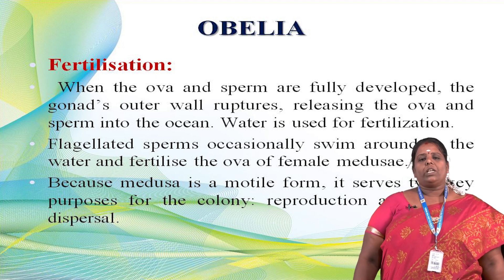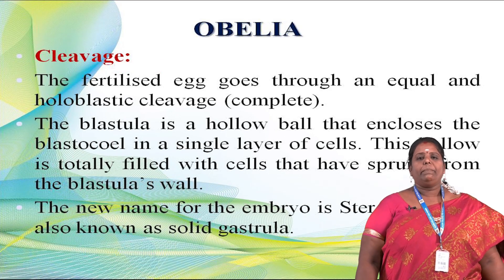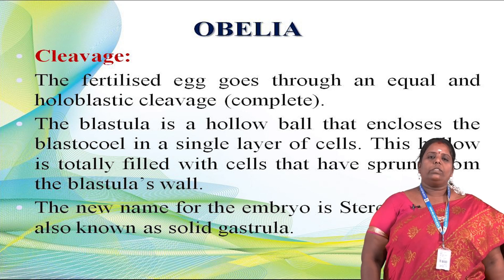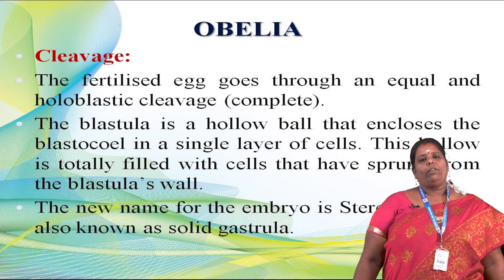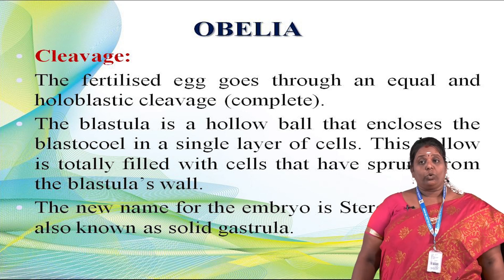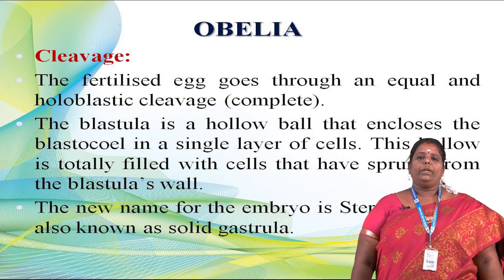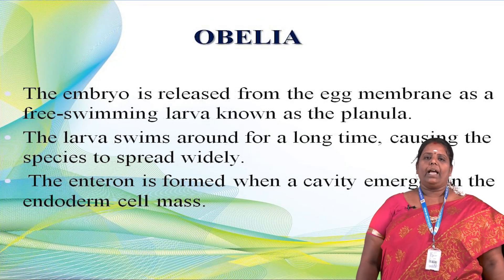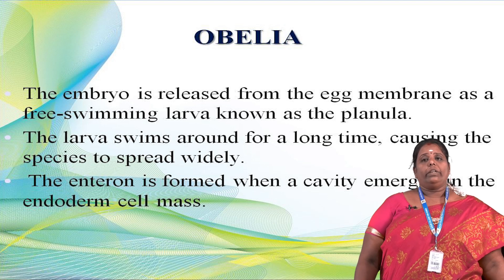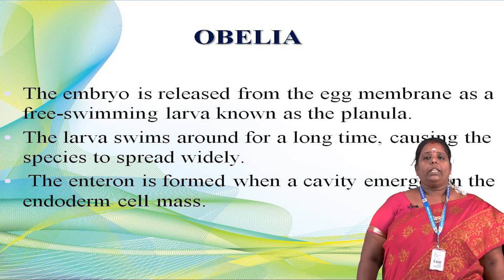The medusae are the motile form, and they serve two key purposes for the colony: reproduction and gamete dispersal in the water. Flagellated sperm swim in the water and fertilize the ova, with external fertilization forming the zygote. In the cleavage stage, the zygote divides into two-cell and four-cell stages — this is called cleavage. The fertilized eggs undergo equal and holoblastic cleavage, developing into a hollow blastula enclosing the blastocoel with a single layer of cells.